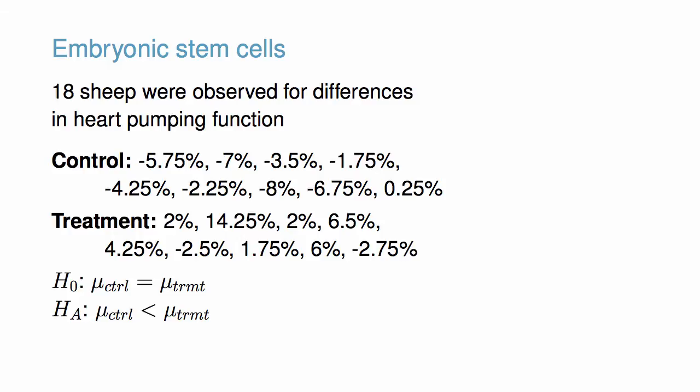We'll first write down the hypotheses. We'll use a one-sided test and a significance level of 0.05.